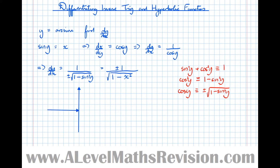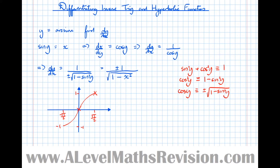First I'm going to remind myself of the shape of the arcsin graph by drawing the sine graph over the domain where it's one-to-one, from −π/2 to π/2. The key points are (π/2, 1), the origin, and (−π/2, −1).